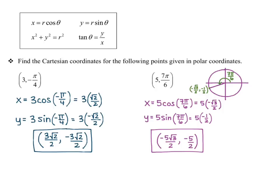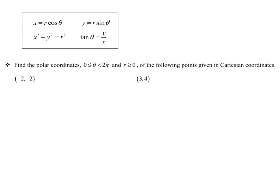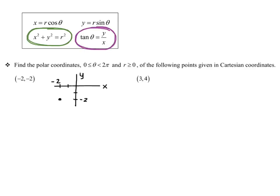Now we want to go the other way — given a point in Cartesian coordinates, find the polar coordinates. This requires the second two formulas. We want to find an angle between 0 and 2π and a positive r. So for the first point (-2, -2), let's think about where this lies in the plane — it's in the third quadrant, so the angle must be between π and 3π/2.